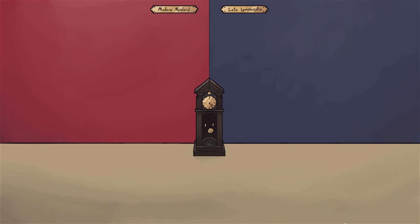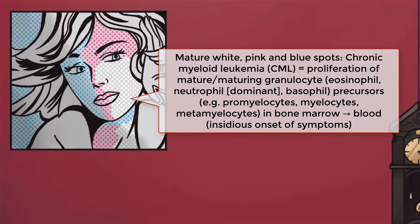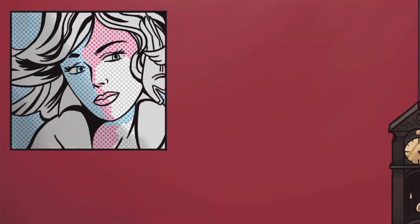Chronic myeloid or myelogenous leukemia, abbreviated CML, is a myeloproliferative neoplasm caused by the unregulated clonal proliferation of mature and maturing granulocytes. At Sketchy, we depict granulocytes as blue, white, and pink dots, symbolizing basophils, neutrophils, and eosinophils, respectively.